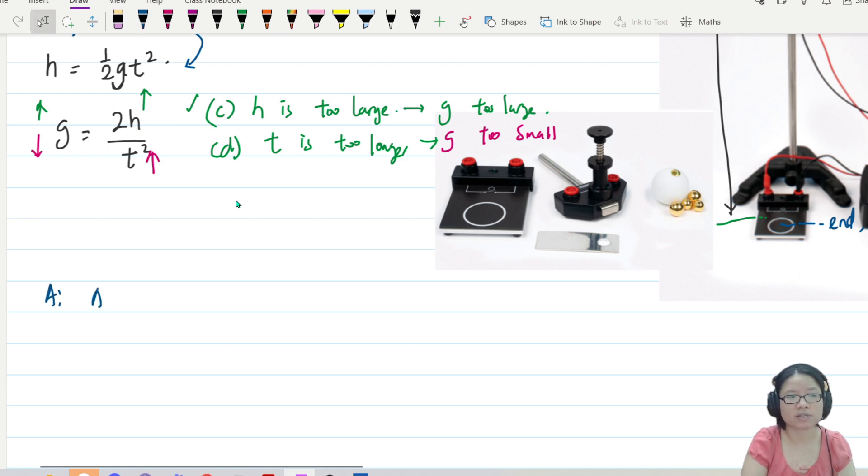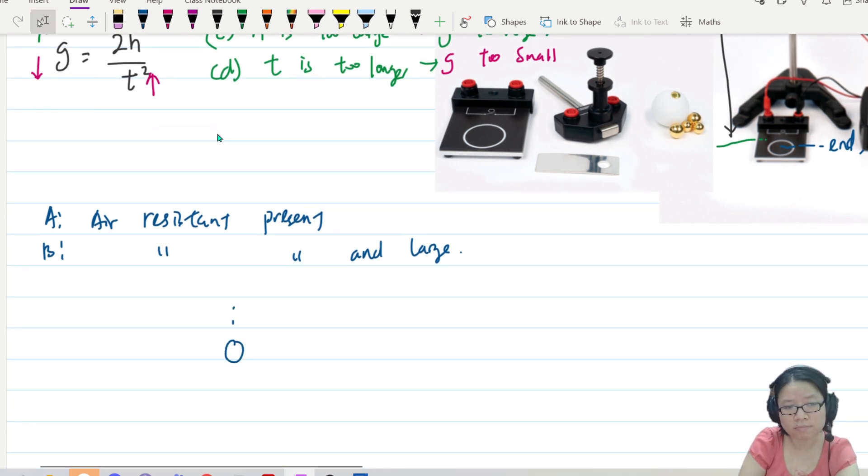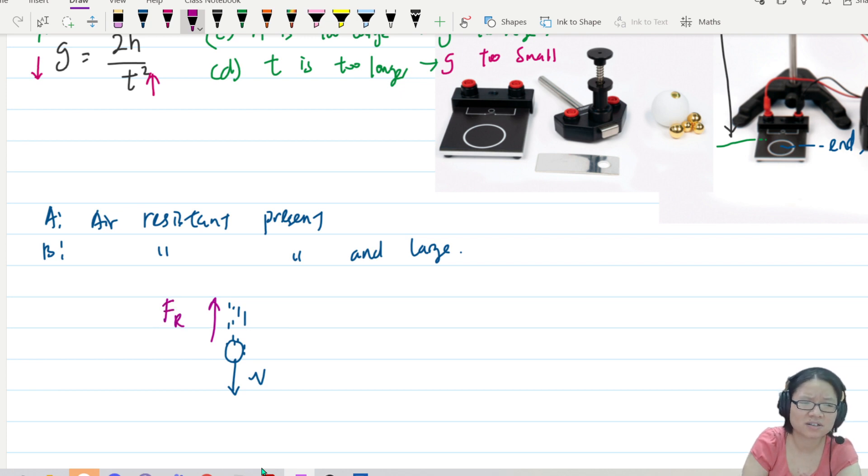So let's think about option A and B. Option A is air resistance presence. Option B is air resistance is present and large. So in both cases, let's consider your ball is falling down. And the direction of velocity is here. Where is air resistance? Air resistance will oppose motion, this is the direction of air resistance. I'm just going to call this FR air resistance. Another force acting on the ball is my good old MG. So air resistance will actually slow down the rate of change of acceleration.